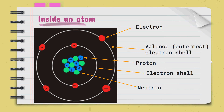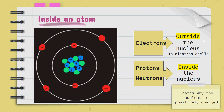Inside the atom, this is how it looks like. The red circles are the electrons, the blue circles are the protons, the green circles are the neutrons, and the white circles are the electronic shells. Take note that the protons and neutrons are clustered together inside the nucleus, whereas the electrons are outside the nucleus and are found in electron shells. That's why the nucleus is actually positively charged — even though there are protons and neutrons, the neutrons are neutral, so they don't provide any charge.